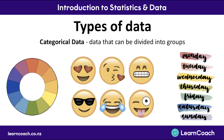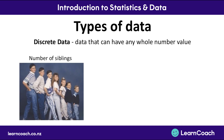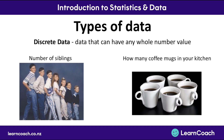The next type of data is discrete data, which is data that can have any whole number value — like one, two, three, five, ten, or a million — any whole number without a decimal place. An example would be how many siblings you have: you can have one sibling or five siblings, but you can't have one and a half siblings. Another example is how many coffee mugs are in your kitchen — you can have two, three, four, or five mugs, but you can't have one and a half mugs.